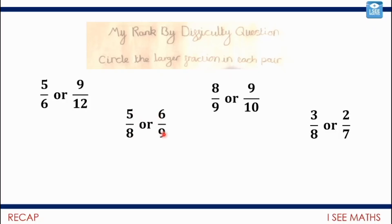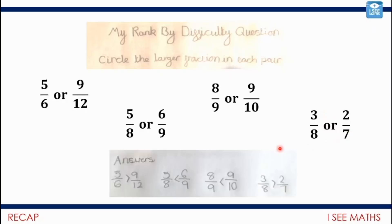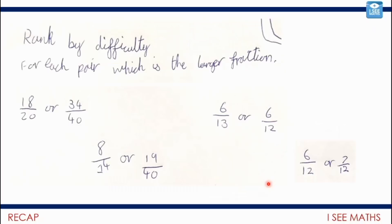Every time you add one to the numerator and the denominator of a proper fraction, the fraction gets larger. Looking at another similar example: three-eighths or two-sevenths - this time we've subtracted one from both numerator and denominator, so the fractions get smaller. Thank you to Joel, who very helpfully provided answers for this one.